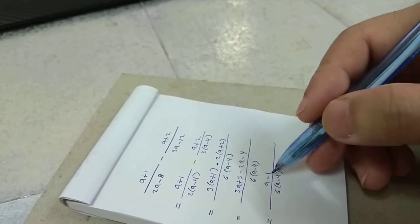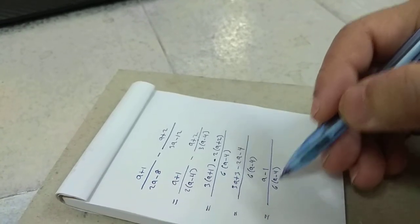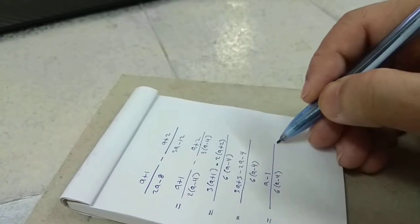So, a minus 1 cannot be factored. There are two factors, so we cannot cancel.